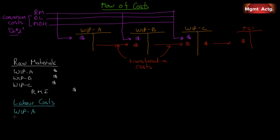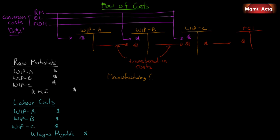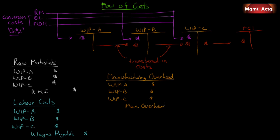Some departments are heavily automated, some are more labor intensive. Work in process A, B, and C can all experience labor costs, credited to wages payable — it's the same journal entry, we just have more work in process accounts. For manufacturing overhead, it can enter in department A, B, or C, coming out of the manufacturing overhead account for the respective department — department A, B, or C.